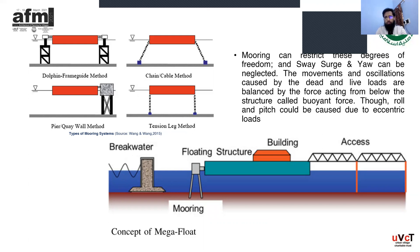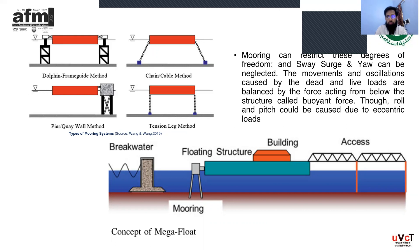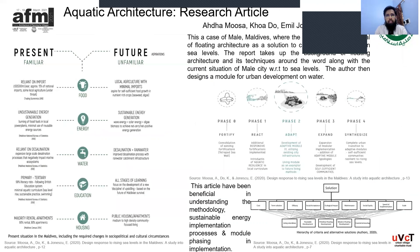When we talk about the mega float, there is Japan's airport which is considered a mega float. They used a breakwater to lessen the water waves directly hitting the structure, they moved the structure, and they provided access from the floating structure to the land structure. These are some of the literature examples we reviewed on floating communities.